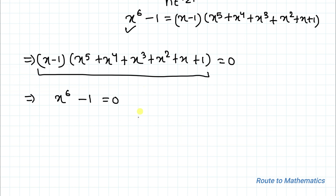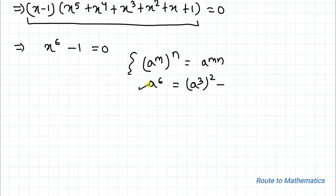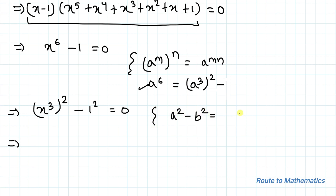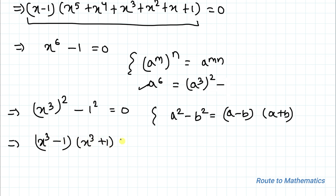Now we know the exponential law that a to the power m, whole to the power n, equals a to the power mn. So we can write x to the power 6 as (x cubed) whole squared. Applying this, we have (x cubed) squared minus 1 squared equals to 0. By applying the algebraic identity a squared minus b squared equals (a minus b)(a plus b), we can write (x cubed minus 1)(x cubed plus 1) equals to 0.